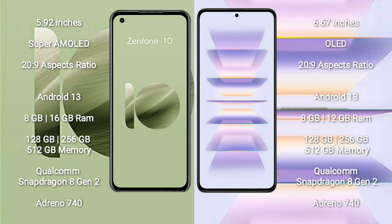Asus Zenfone 10 runs on the Android 13 operating system. Redmi K60 Pro also runs on Android 13. Asus Zenfone 10 comes with 8GB or 16GB RAM and 128GB, 256GB, or 512GB internal storage.